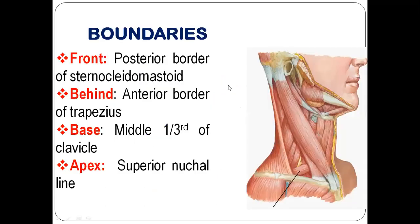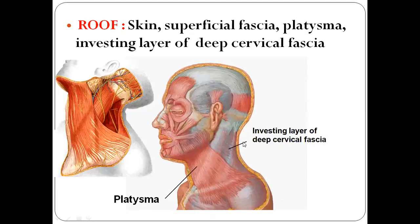The posterior triangle is a triangular area behind the sternocleidomastoid. Boundaries: anteriorly — posterior border of sternocleidomastoid; posteriorly — anterior border of trapezius; base — middle one-third of the clavicle; apex — superior nuchal line, or the meeting point of sternocleidomastoid and trapezius muscles.